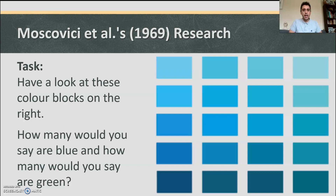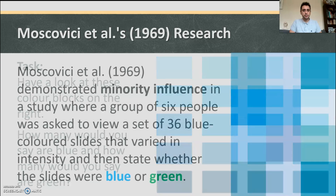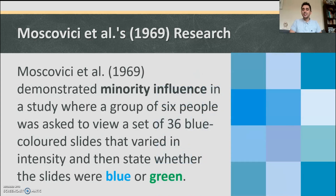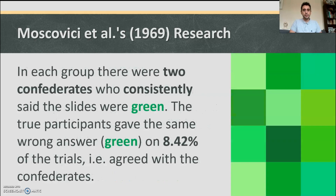Have a look at these color blocks on the right. How many would you say are blue and how many would you say are green? They're clearly all green. Moscovici et al demonstrated minority influence in a study where a group of six people was asked to view a set of 36 blue colored slides that varied in intensity, and then state whether the slides were blue or green. In each group, there were two confederates — fake participants — who consistently said the slides were green.